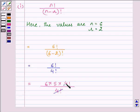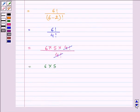These two terms will get cancelled out and we are left with 6 multiplied by 5, that is equal to 30. So the answer to the first part is 30.